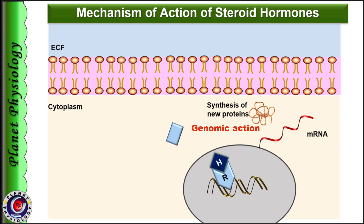Steroid hormones also possess some membrane receptors, which act through second messengers like cyclic AMP or calcium ions. Cellular response of steroid hormones through membrane receptors is rapid and is known as non-genomic action.